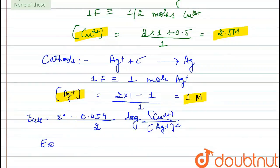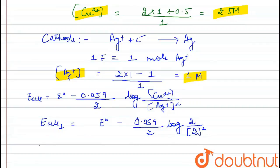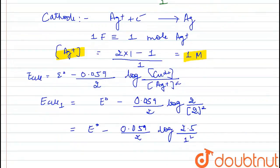For E_cell1 (initial conditions): E_cell1 = E° − (0.059/2) × log(2 / 2²). For E_cell2 (after current flow): E_cell2 = E° − (0.059/2) × log(2.5 / 1²), using the new concentrations of Cu²⁺ = 2.5 M and Ag⁺ = 1 M.